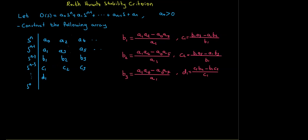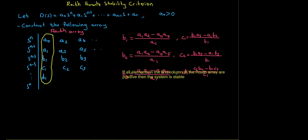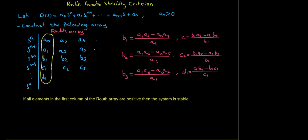This is called the Routh array. To check stability I inspect the first column of the Routh array. The rule is: if all elements in the first column of the Routh array are positive, then the system is stable.